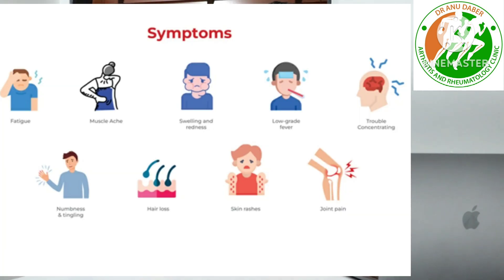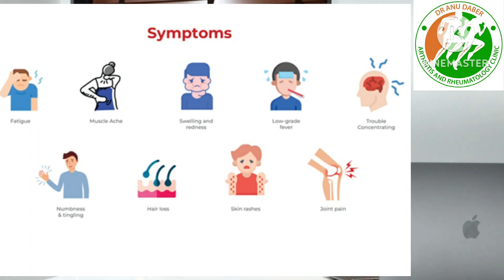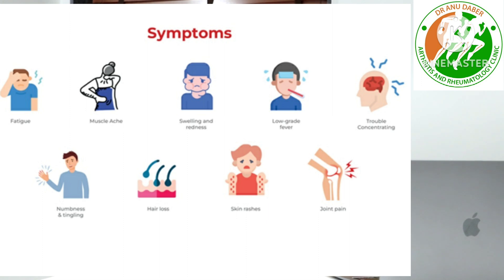Some common symptoms which autoimmune diseases share include joint pain, joint swelling, stiffness in the morning lasting greater than 30 minutes, excessive hair fall, ulcers in the mouth which start happening at very frequent intervals. In addition to that, there can be photosensitivity in the skin.